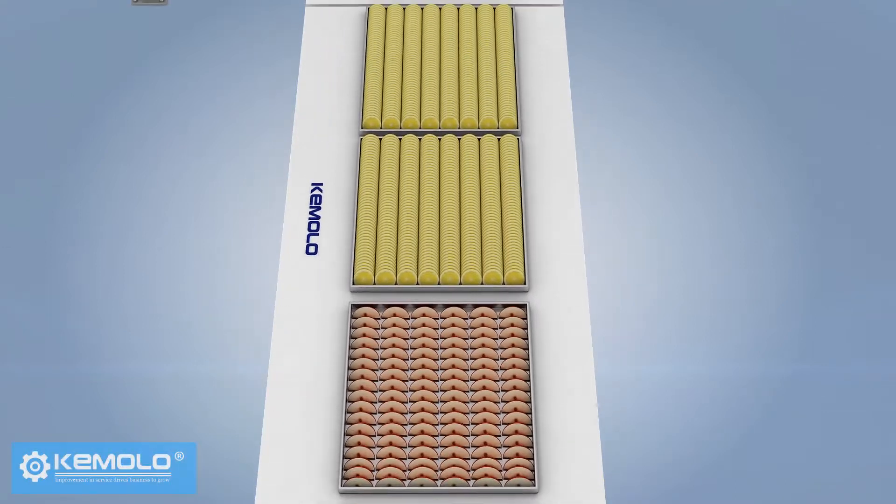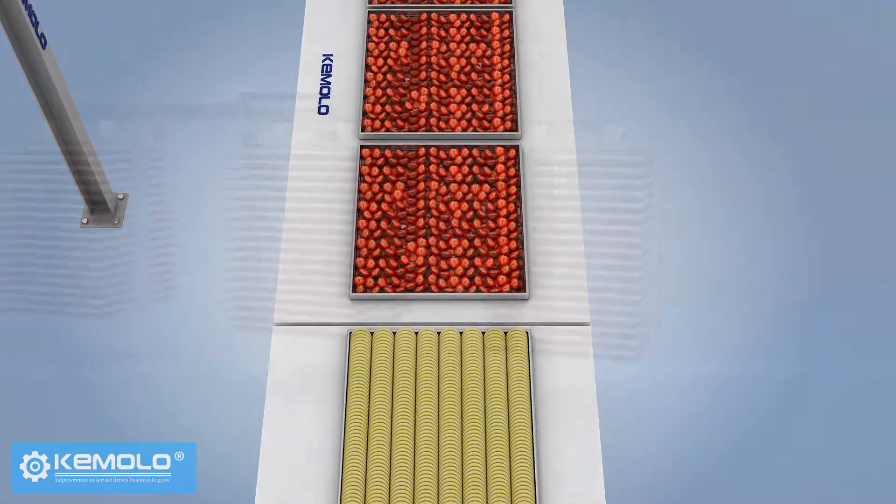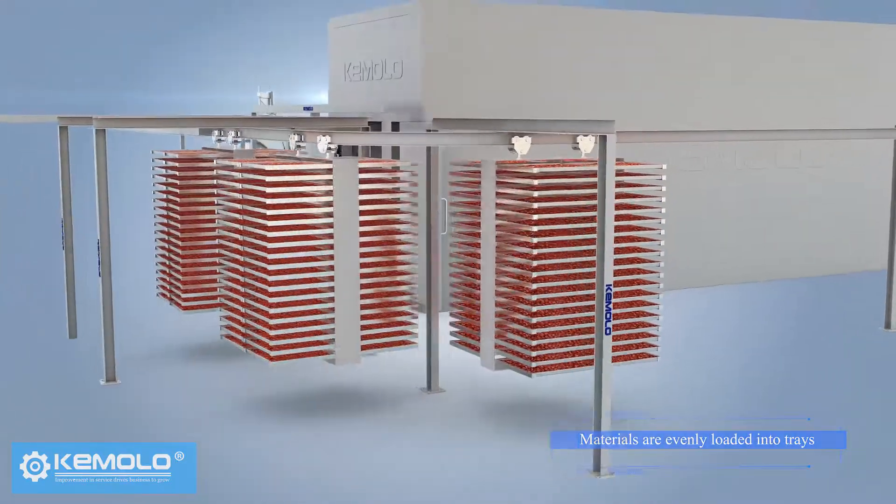First, wash and slice the fruits, vegetables, or other pre-processed materials evenly and load them into product trays.